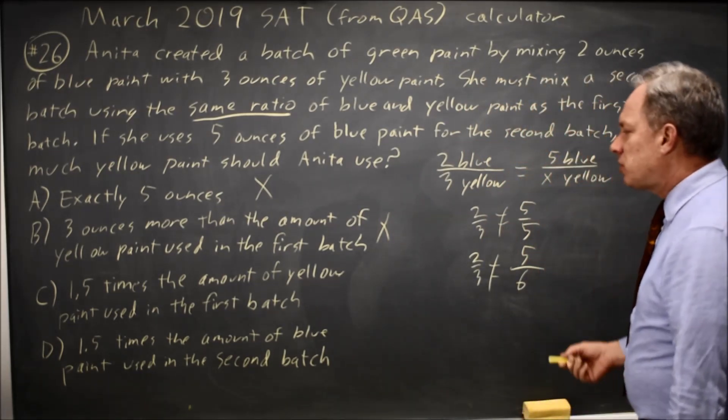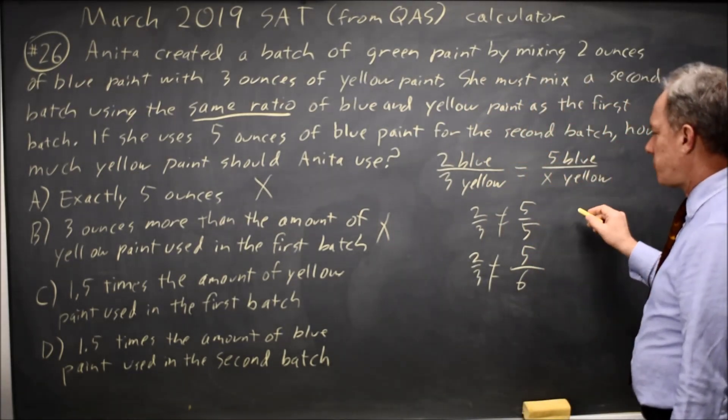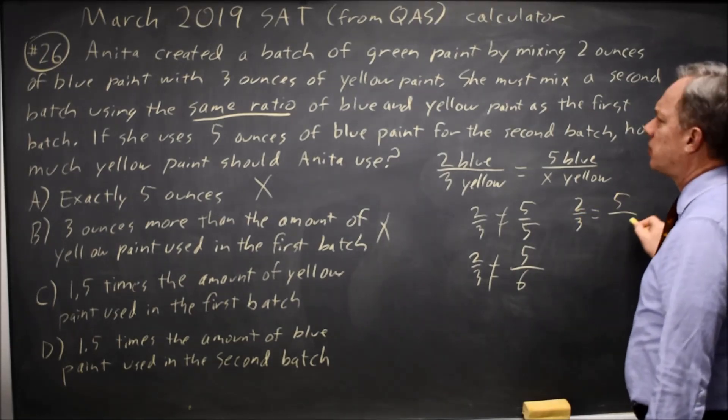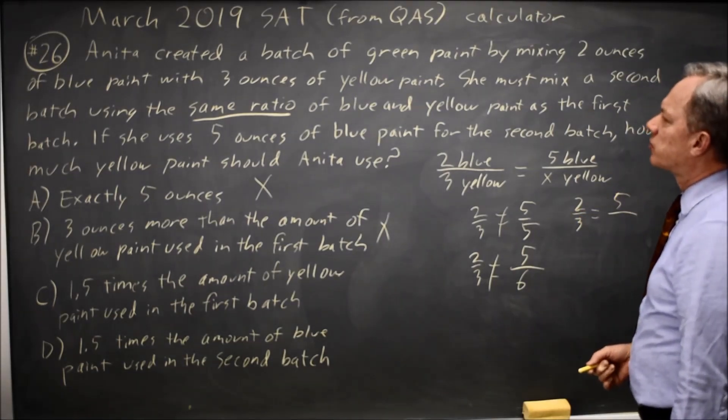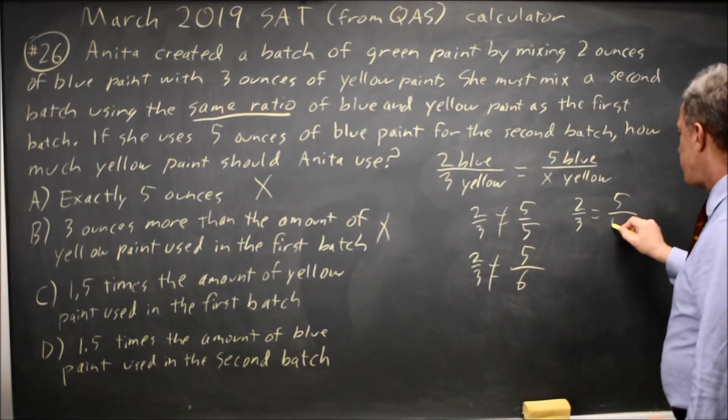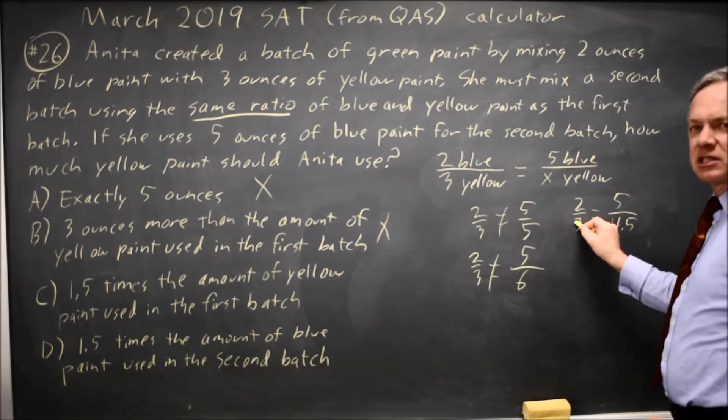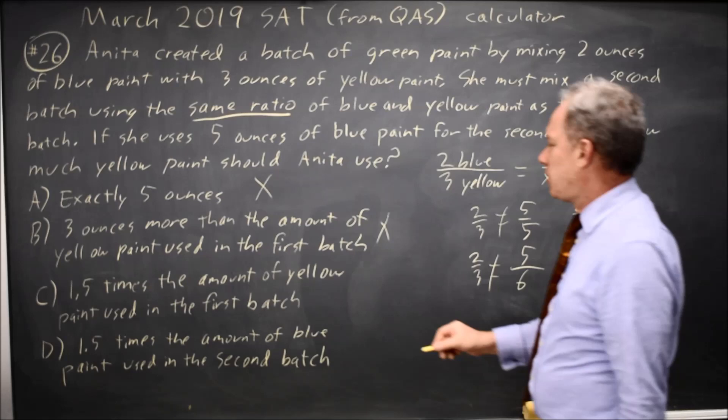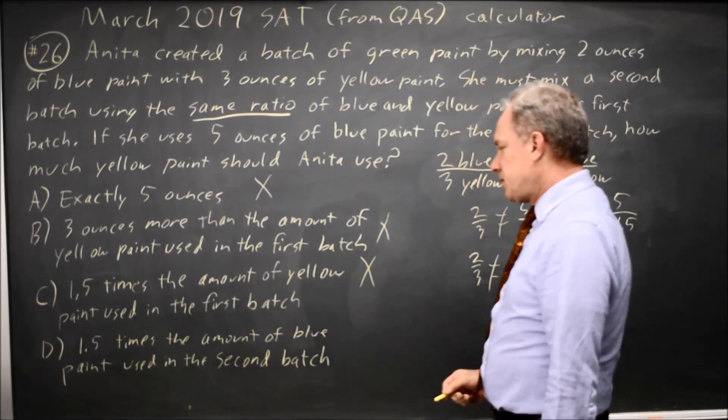How about choice C? 1.5 times the amount of yellow in the first batch. So that would be 2/3 equals 5 over, the amount of yellow in the first batch was 3. 3 times 1.5 is 4.5. But 2/3 is less than 1. 5 over 4.5 is more than 1. So those cannot be equal. I'm hoping the last choice will work.